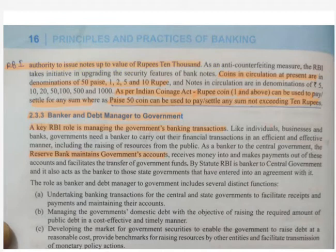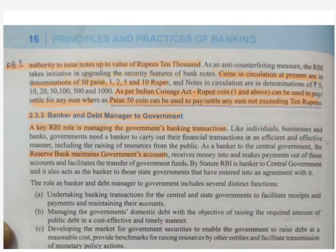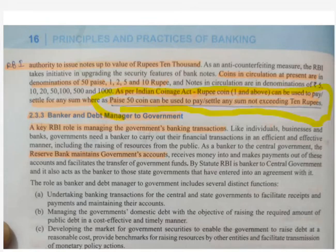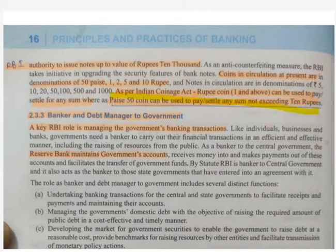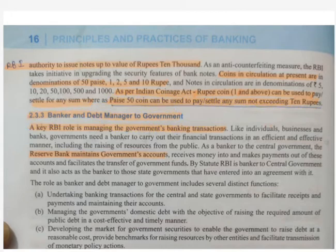About coins: 50 paisa coins can be used to pay a sum not exceeding 10 rupees — meaning maximum 50 paisa coins you can use at a time is 20 coins (worth 10 rupees). RBI also acts as debt manager to the government, managing the government's banking transactions and accounts. RBI also acts as banker to banks — helping in clearing and settlement, fund transfer, and enabling banks to maintain their accounts for CRR and SLR.